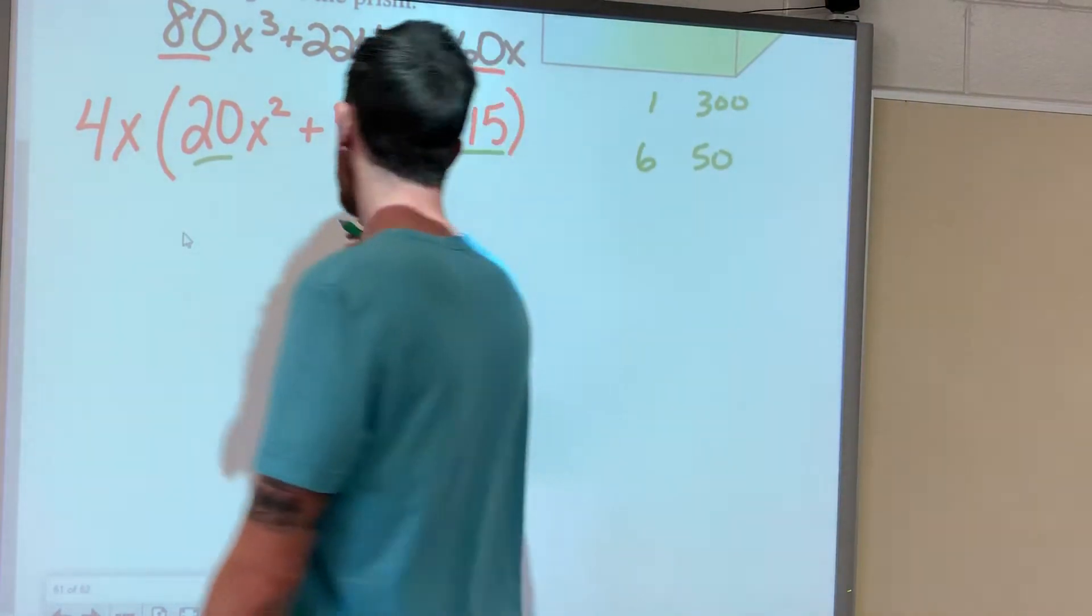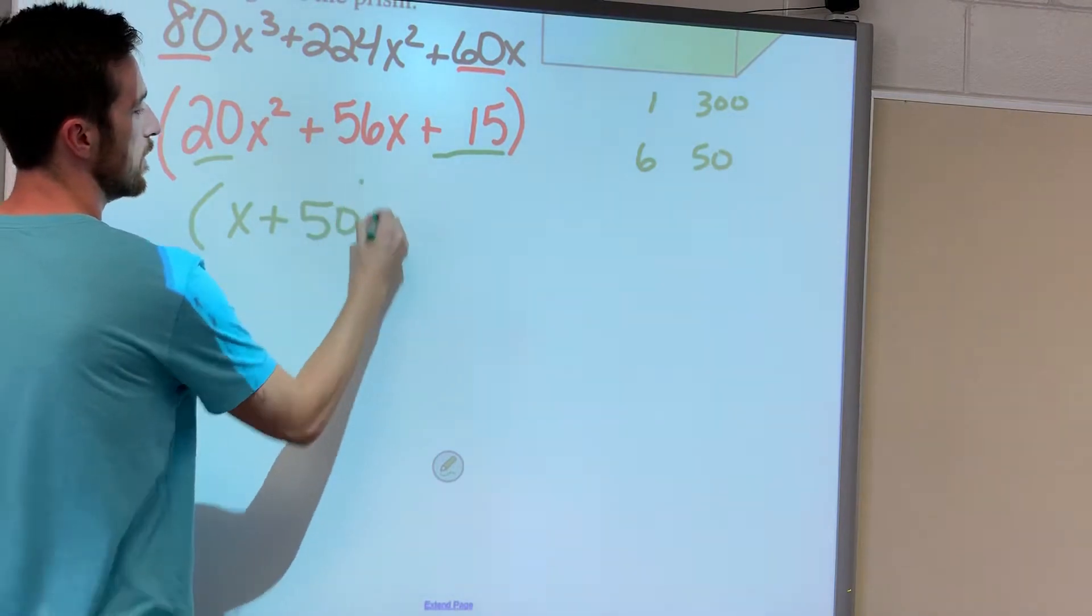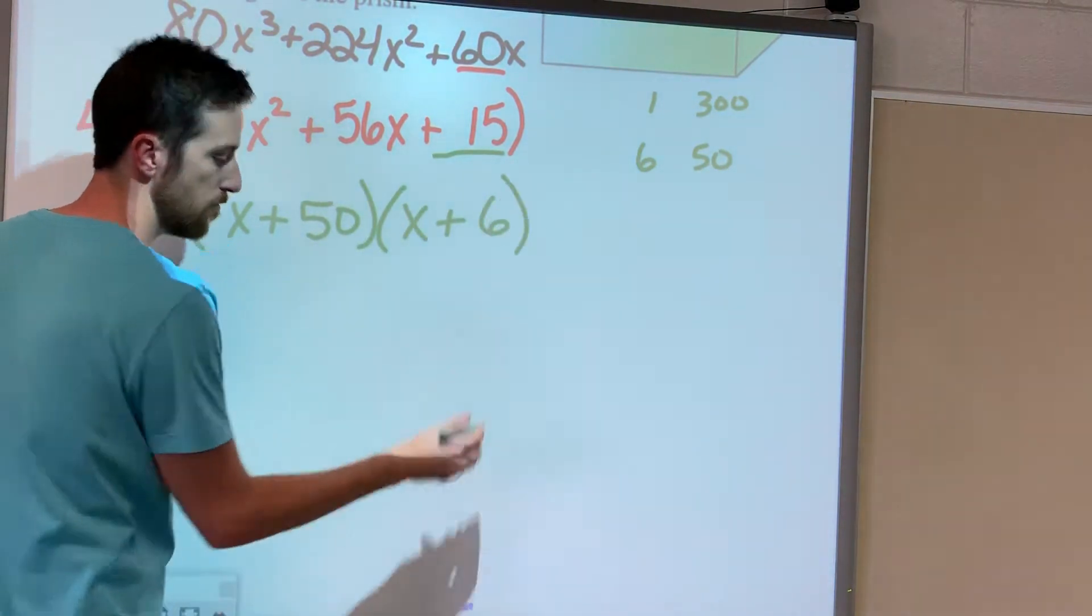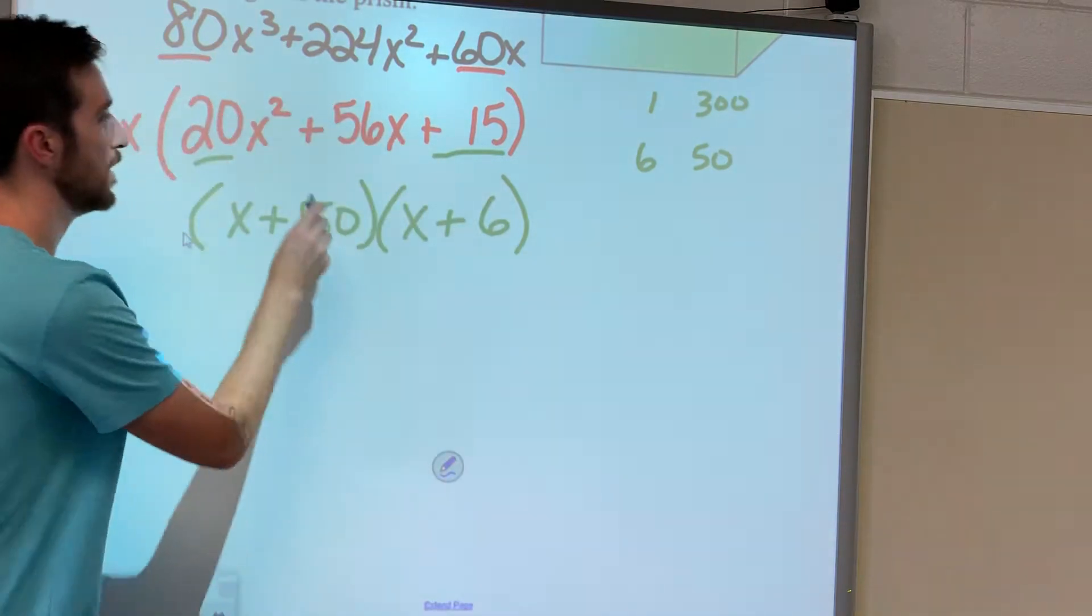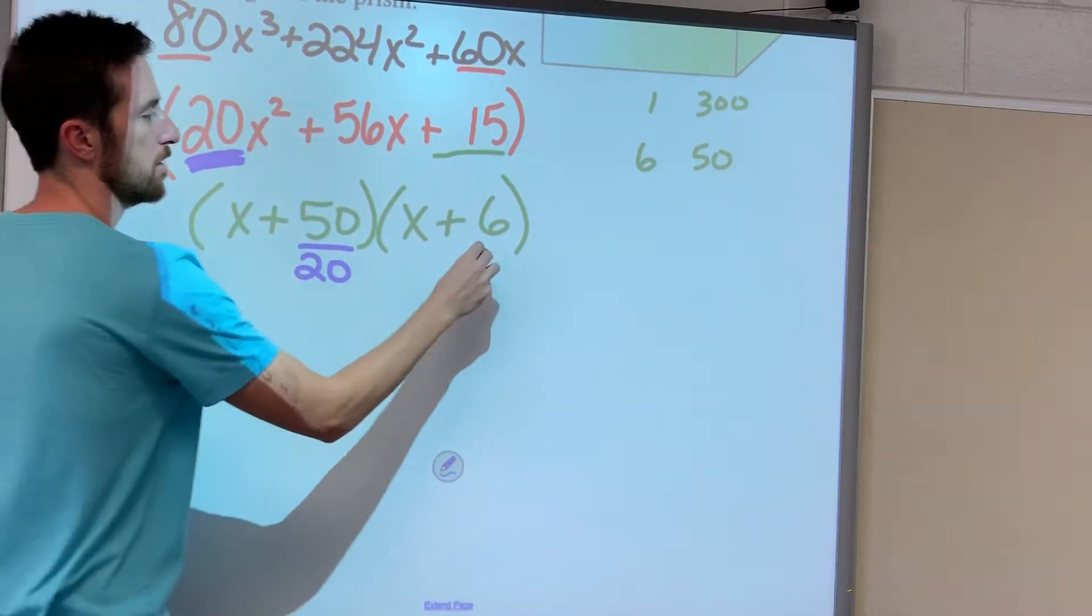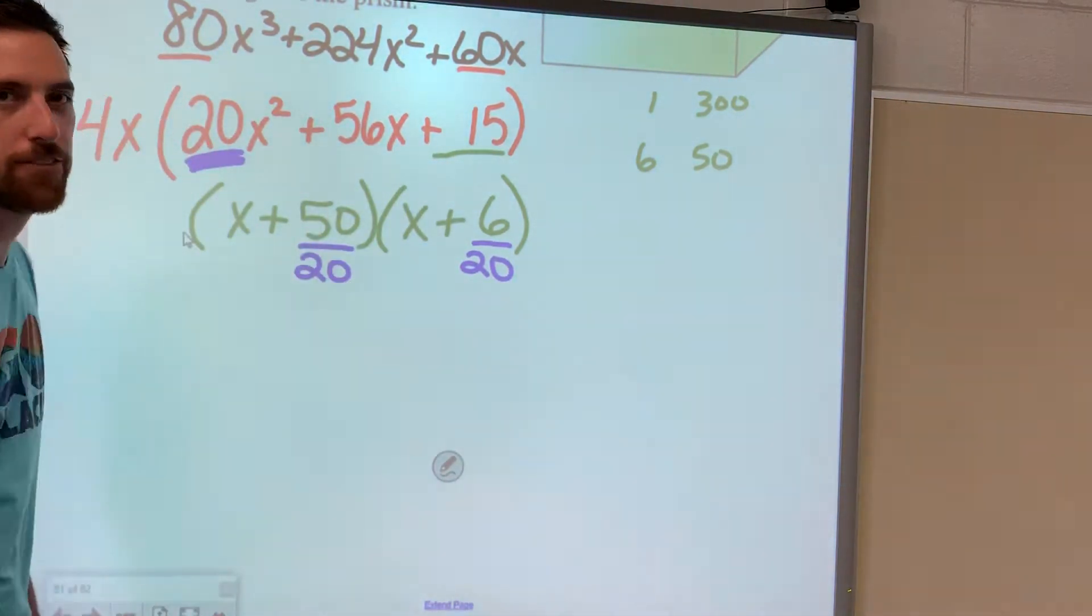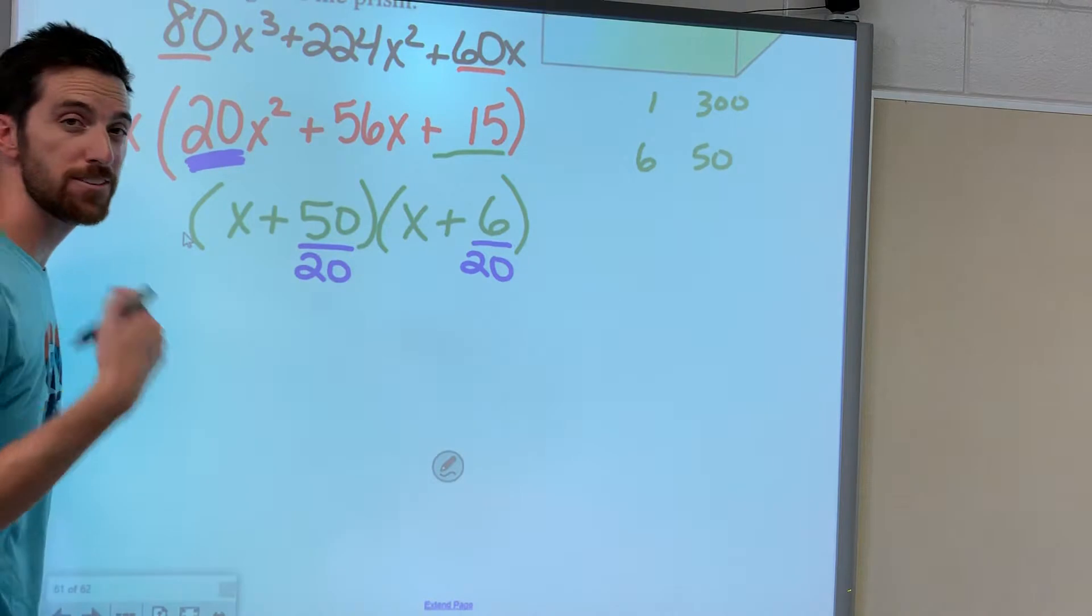They'd have to both be plus. x plus 50, x plus 6. And then remember we try to divide those by the number in front, the 20. 50 doesn't divide evenly into 20, but they're both divisible by 10.